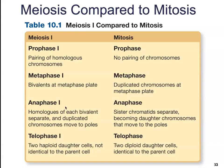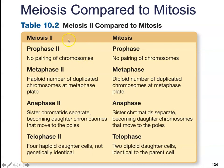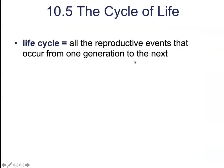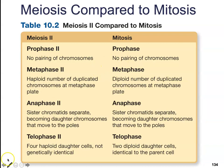Here's another table that shows the similarities and differences between meiosis 1 and mitosis, and then it does the same for meiosis 2 and mitosis. You'll see that meiosis 2 and mitosis are almost exactly the same, whereas there is quite a bit of difference between meiosis 1 and mitosis, depending on whatever the goals are for each of those stages.